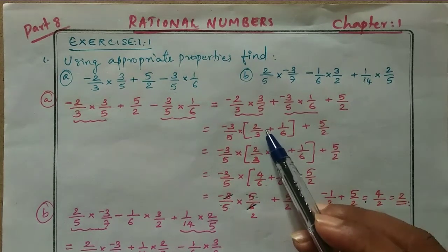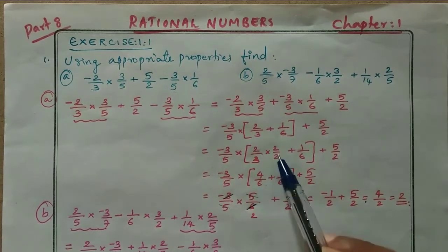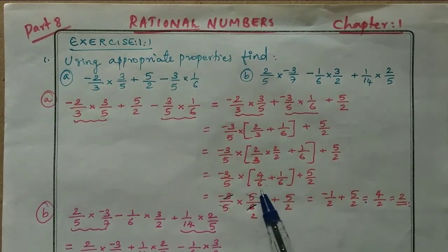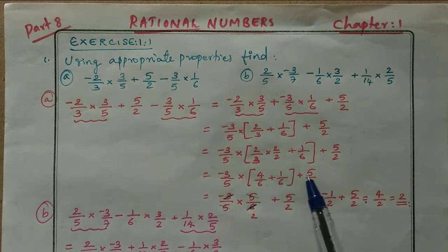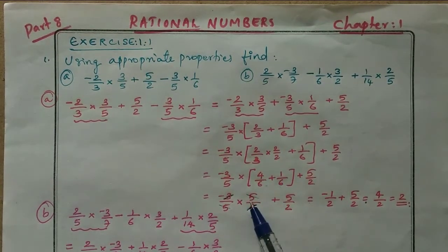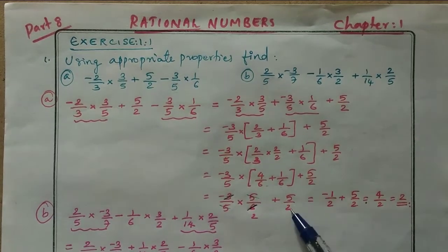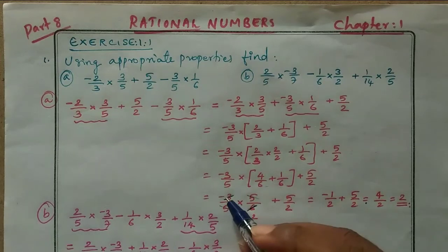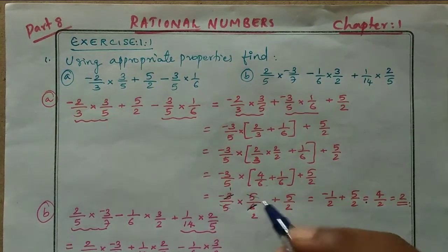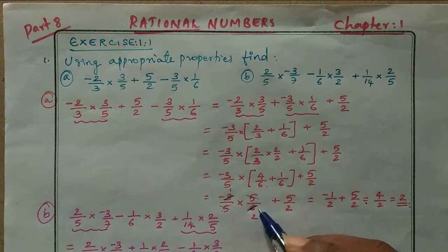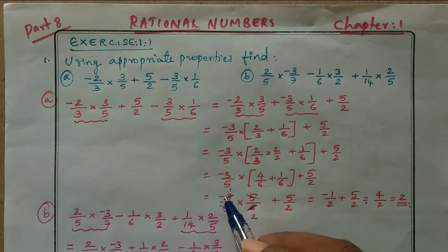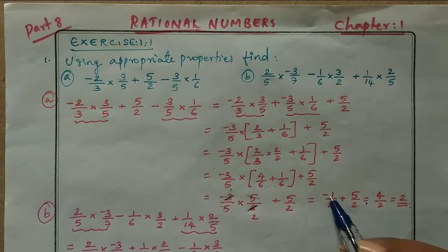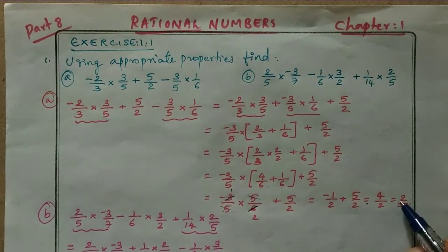Denominators are not the same, so multiply 2 by 2: giving 4 over 6 and 1 over 6. Since denominators are now the same, 4 plus 1 equals 5 over 6. Then cancel: 3 and 6 give 2; 5 and 5 cancel; so minus 1 by 2 plus 5 by 2. Denominators are the same: minus 1 plus 5 equals 4 by 2, which equals 2.